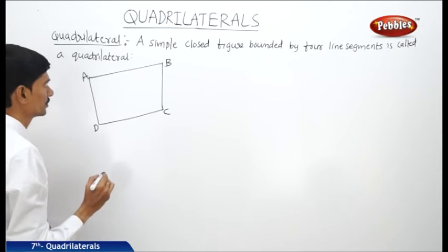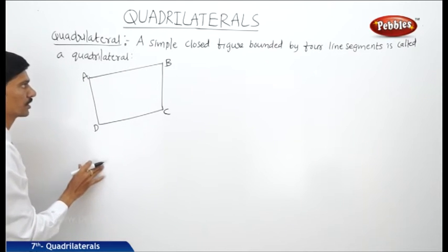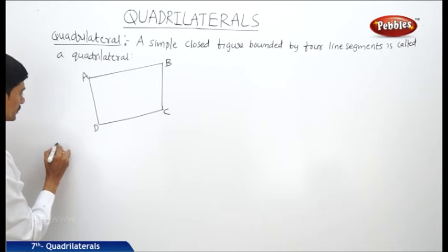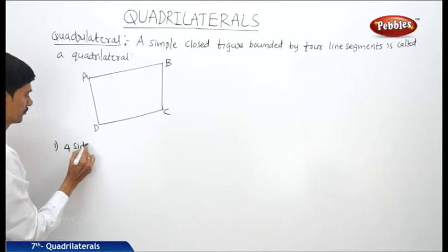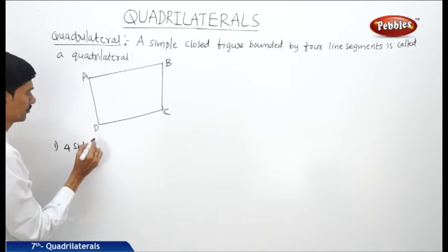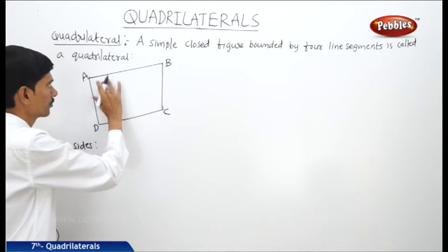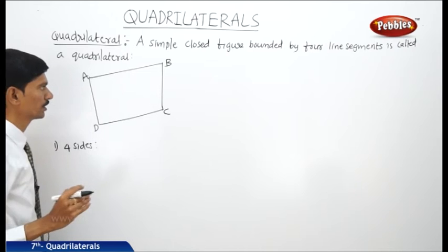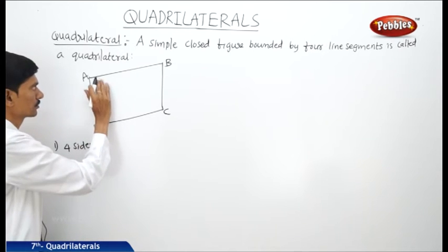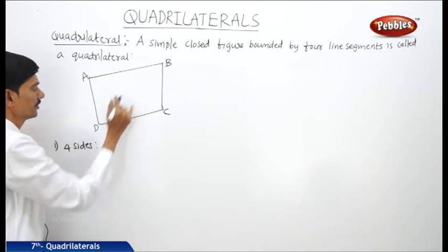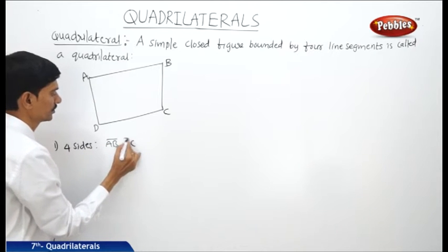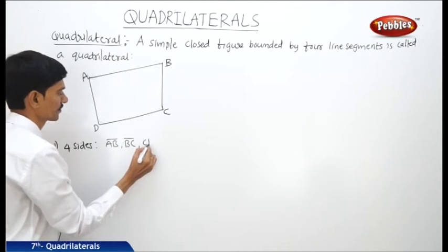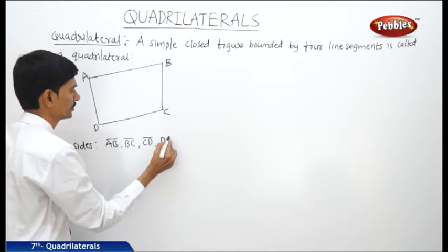Now, what are the different parts of the quadrilateral ABCD? The first one is the sides — four sides. The four line segments which form the quadrilateral are called the sides, namely AB, BC, CD, and DA.